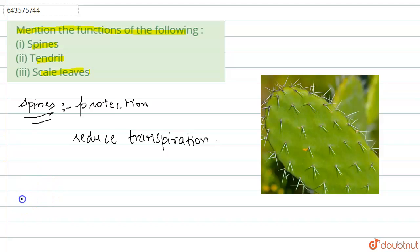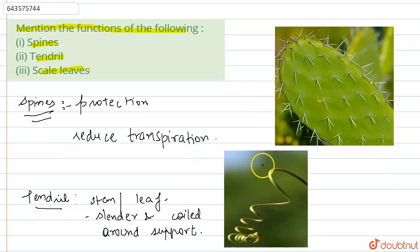Next, we have to mention the function of tendril. Tendril may be a stem modification or leaf modification. These are slender and coil around the support, so they provide support to the plant. Here is the structure of tendril - this diagram shows how it coils around support and is present mainly in vines.